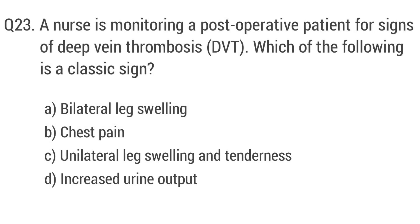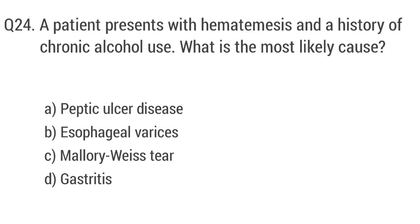Question number twenty-three. A nurse is monitoring a post-operative patient for signs of deep vein thrombosis. Which of the following is a classic sign? The right answer is option C: unilateral leg swelling and tenderness.